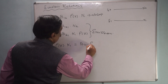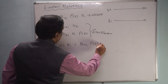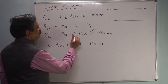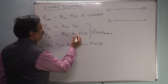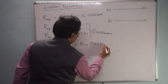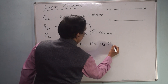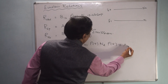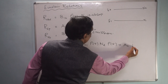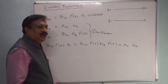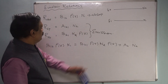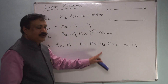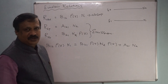In equilibrium, absorption equals emission. Therefore we equate: B12·ρ·N1 = B21·ρ·N2 + A21·N2. The left-hand side is absorption, and the right-hand side contains both stimulated and spontaneous emission terms.